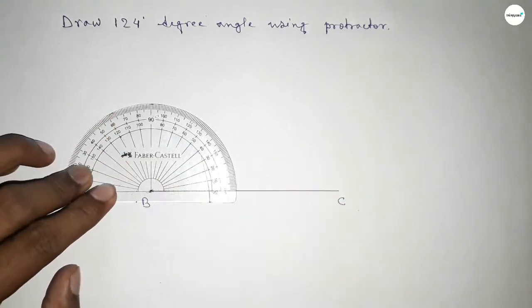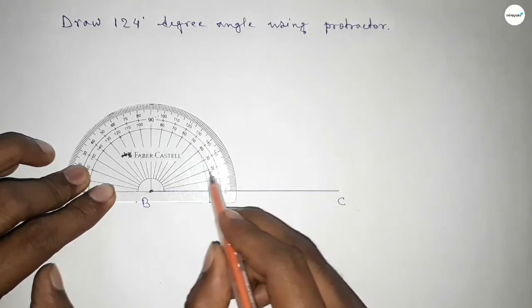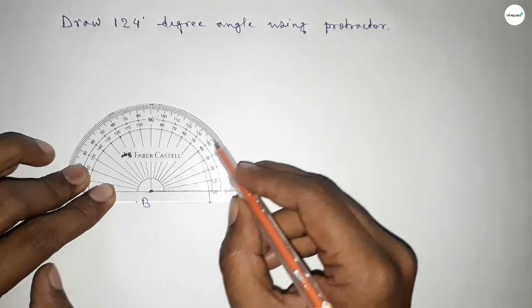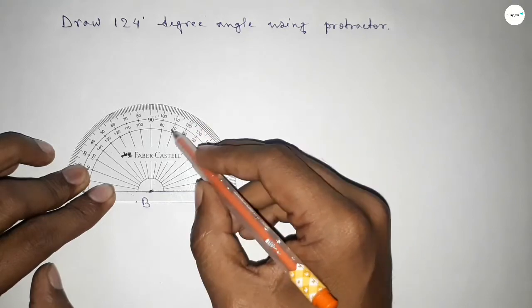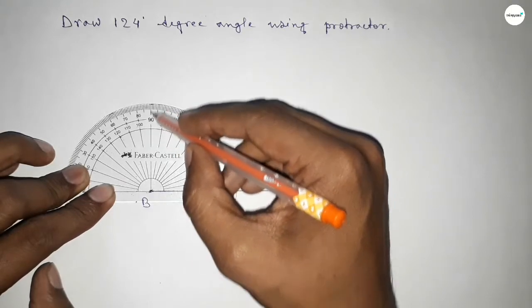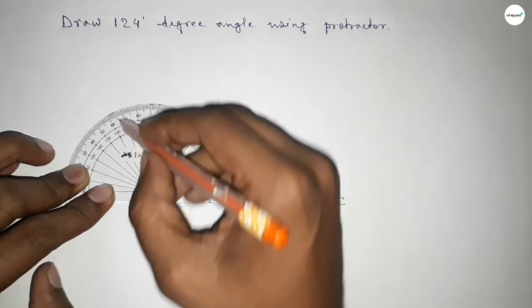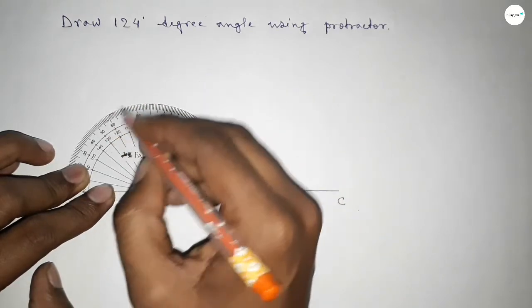This is starting angle: 0, 10, 20, 30, 40, 50, 60, 70, 80, 90, 100, 110, 120, 121, 122, 123, 124.